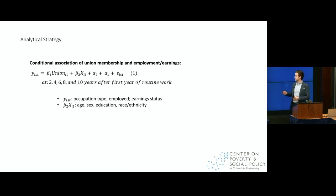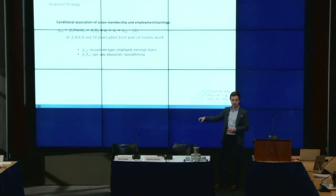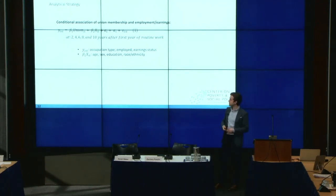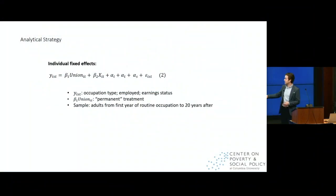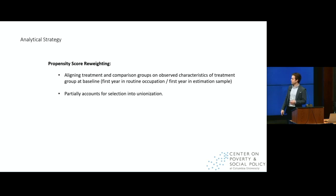For those who prefer equations — the outcome variable is simply the occupation type at two, four, six, eight, and ten years later: still in routine work, in a non-routine cognitive job, non-routine manual, unemployed, or low earnings. This is controlling for age, sex, education, race, ethnicity, year dummies, and state dummies. The individual fixed effects model is almost identical but adds person-level fixed effects, treating unionization as a permanent treatment — if you became unionized at all during routine work, I count you as a unionized individual and look at your employment and earnings outcomes, even if you later leave your job or union.